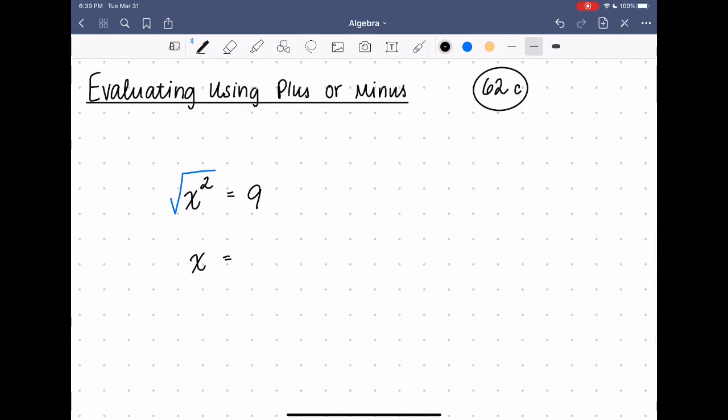But anything I do to the left side of the equation, I also have to do to the right. So I would square this side and I would get 3, because 3 is the square root of 9, which is the same answer that we had before.